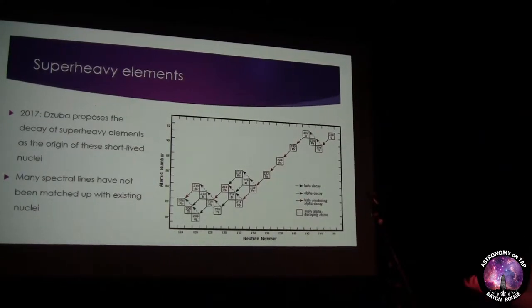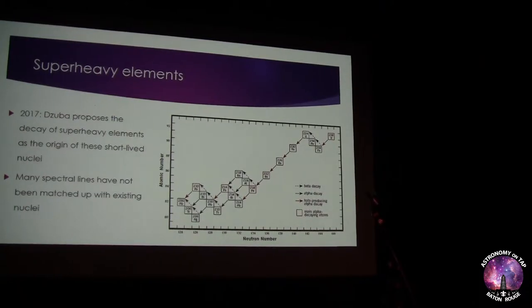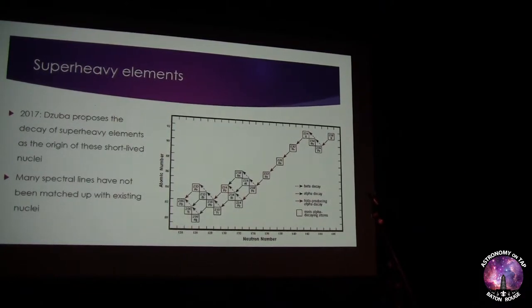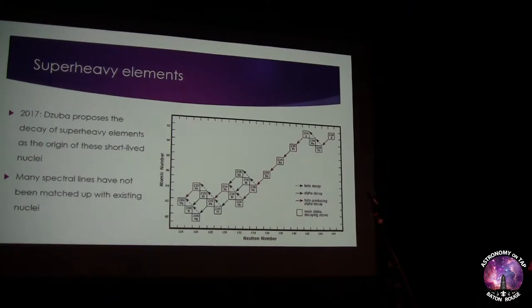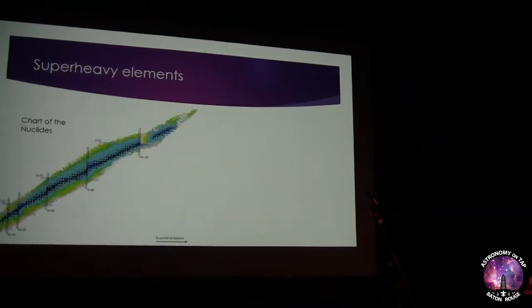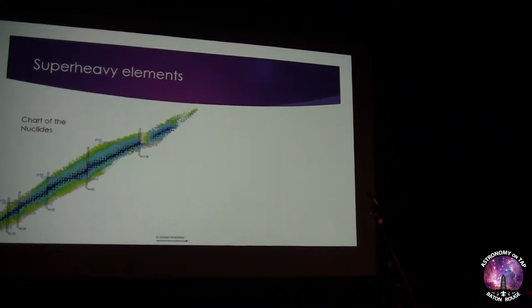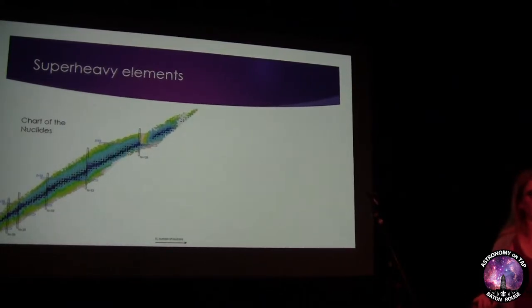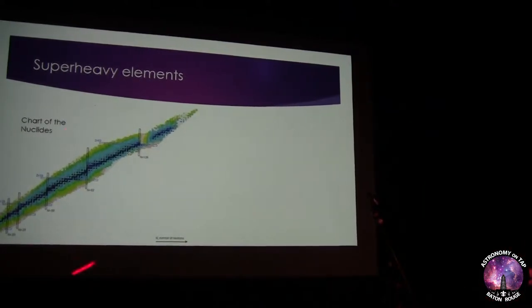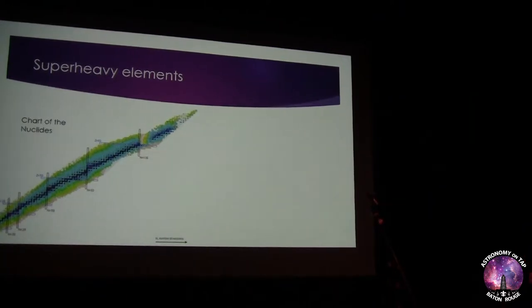This idea works because there are some spectral lines that we haven't been able to match up to known elements — meaning they could be from these super heavy elements. This is a pretty interesting idea to nuclear physicists like me and the people I work with, because it basically adds things on to our chart of the nuclides, which is this big strip of, let's call it, rancid-looking bacon.